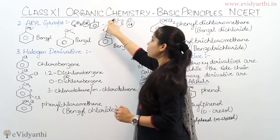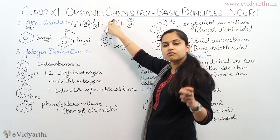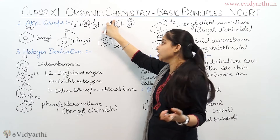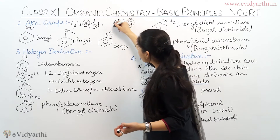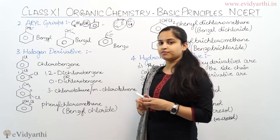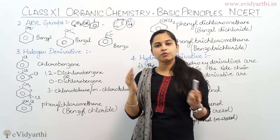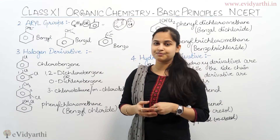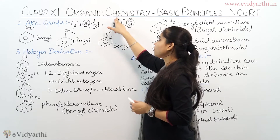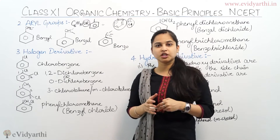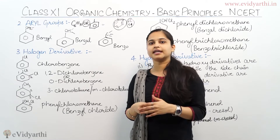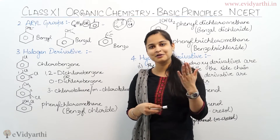So this is my aryl group. Here I have no functional group attached. This is my aryl group because this is a carbon atom with no other substituent placed here. So if I have no other substituent placed, I get C6H5. And what do we call it? Aryl group.